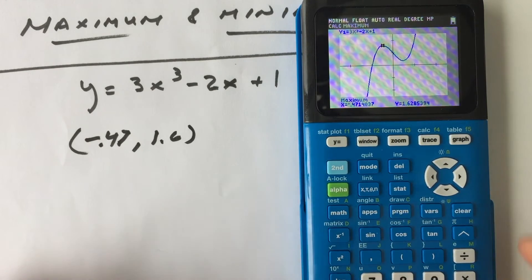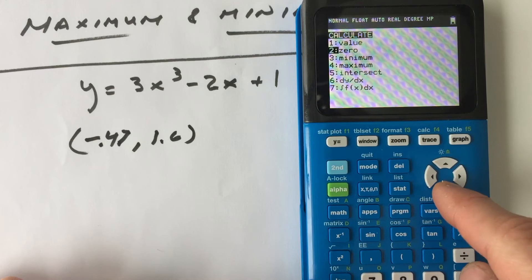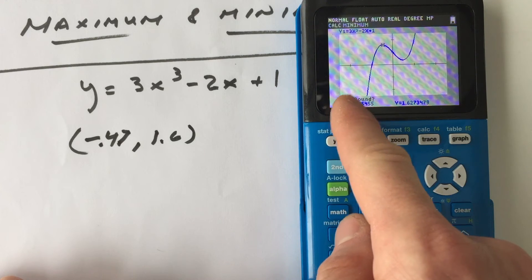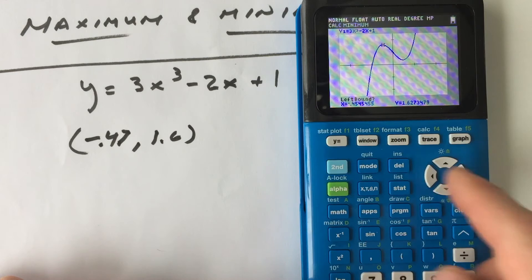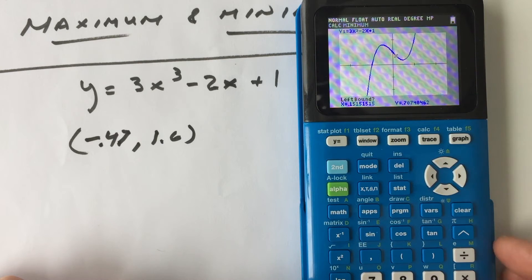Now, if we want to find the relative minimum, it's the same process. You go to second, calculate, but now you want to select minimum. Enter. And again, see how it says left bound down here in the lower left-hand corner. So you want to arrow just a little bit to the left of that low point. Enter.